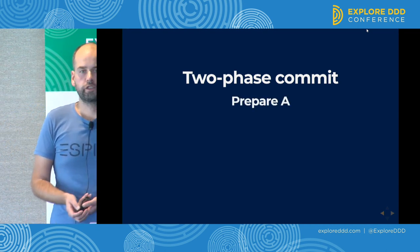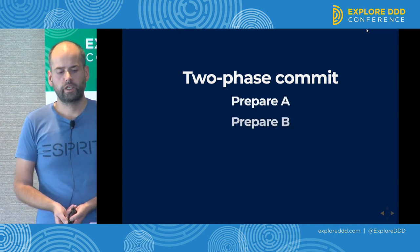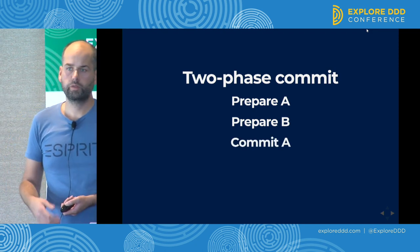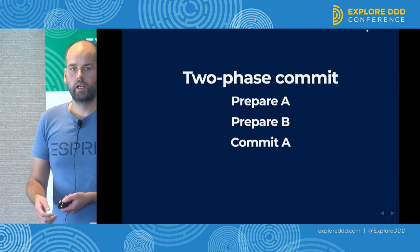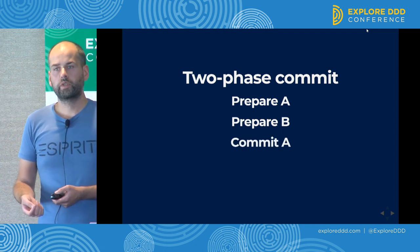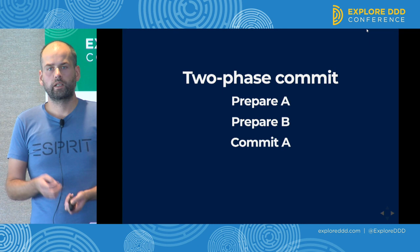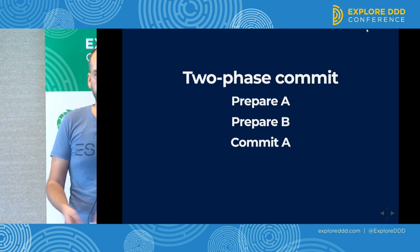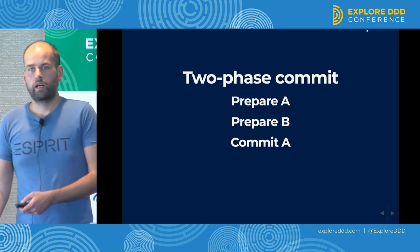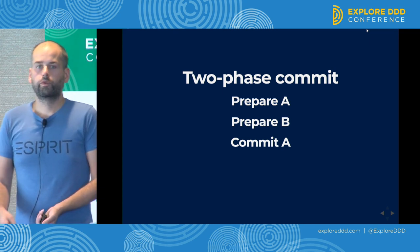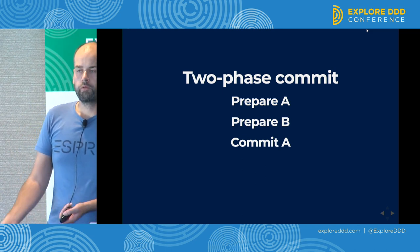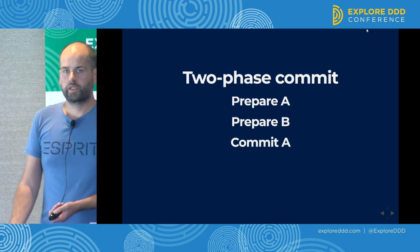Two-phase commit consists of two stages: a prepare stage and a commit stage. In the prepare stage, if we are talking to two databases, we tell each database to prepare their transaction. And then when they report that they are good to commit, we commit both transactions.